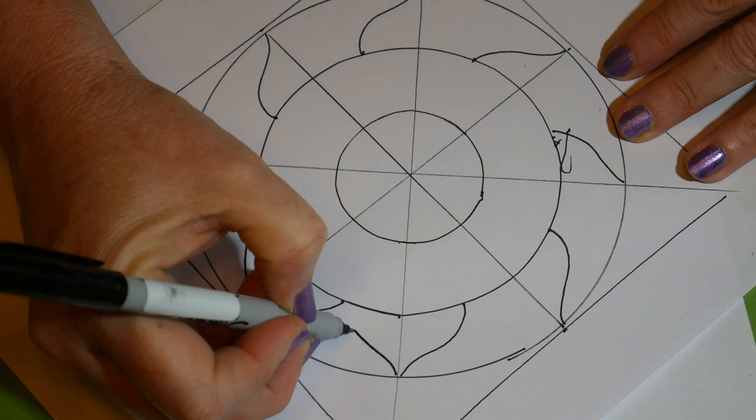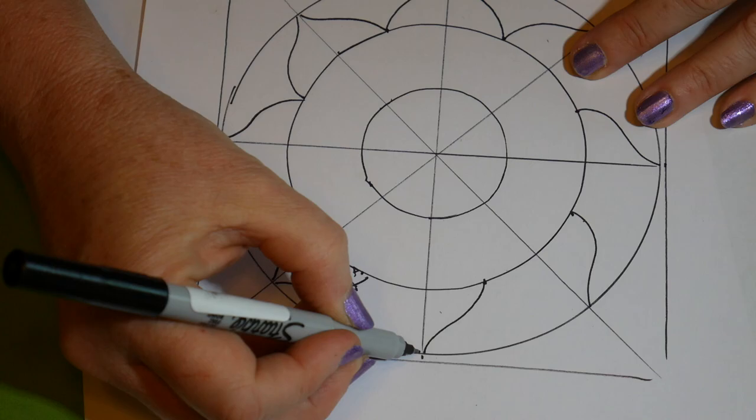And then go back and do the other side until you have a leaf pattern all the way around.